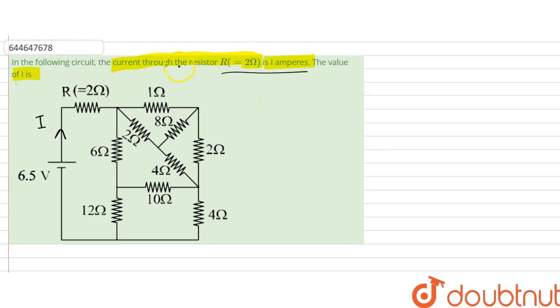So if we want to find that, we have to find first of all the equivalent resistance. So the equivalent resistance we have to find.